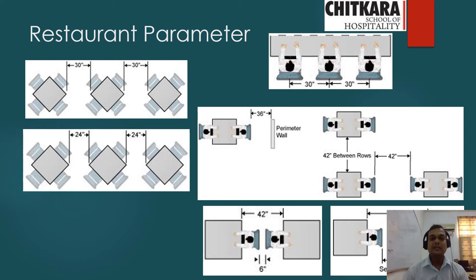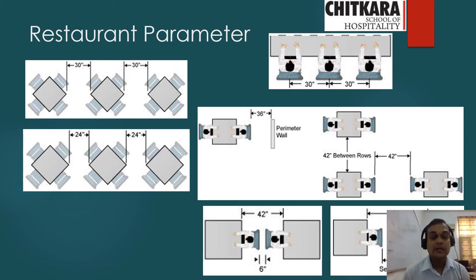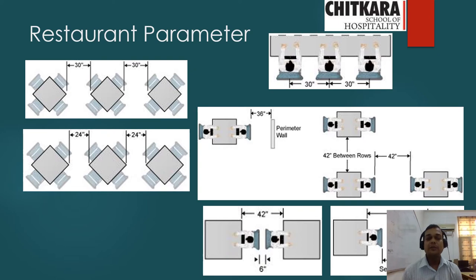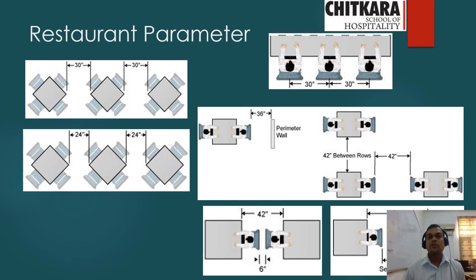Many restaurants have space constraints; in that scenario the space between two diagonal tables should not be less than 24 inches, otherwise it becomes very difficult for guests as well as the service team to provide service. Looking at the rectangular table in the next picture, the space between the middle of two chairs should be 30 inches. In case the table setup is against the wall, 36 inches is the international standard gap between the wall and the guest's chair.